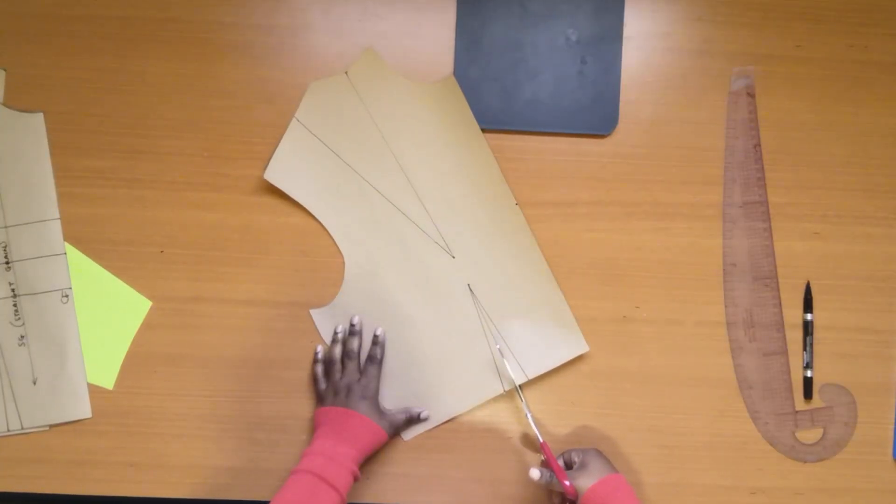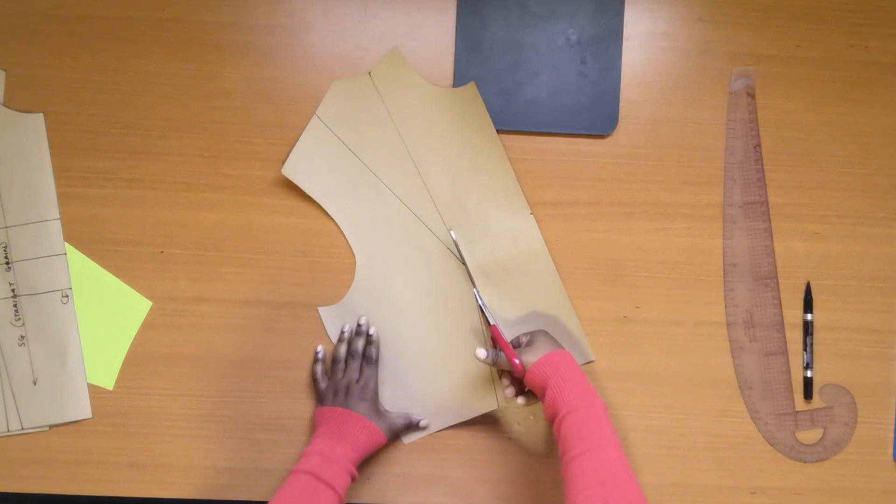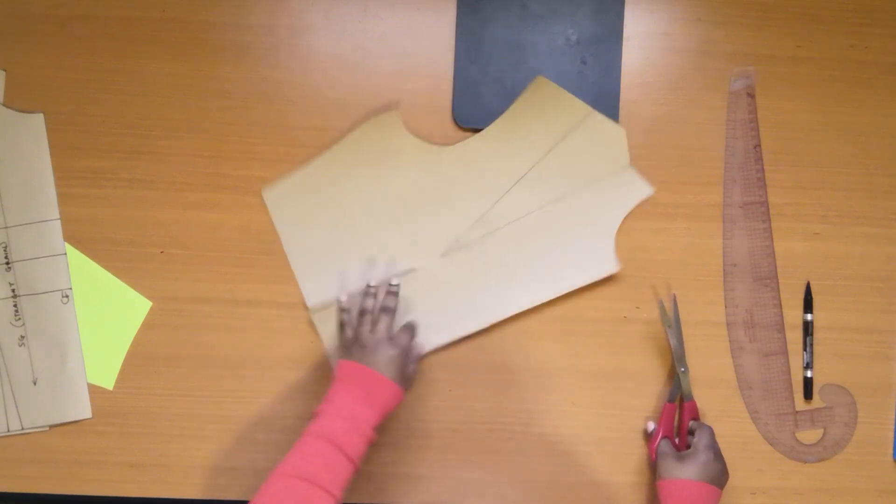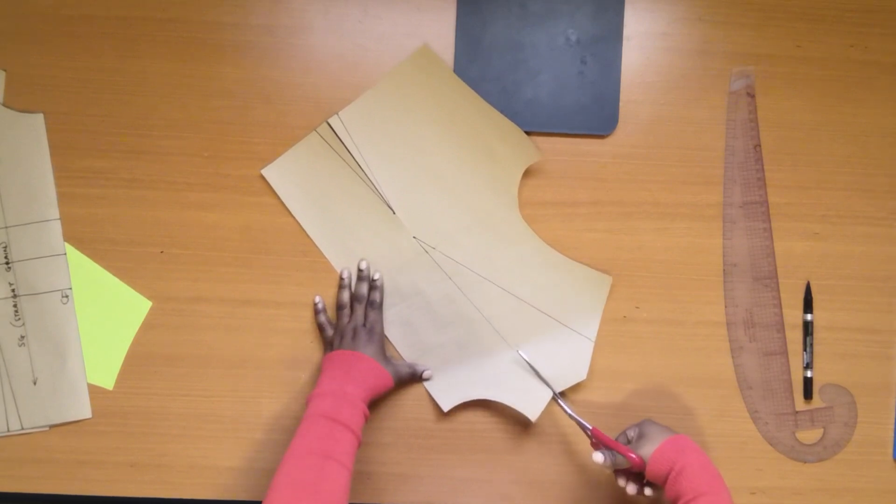For the second dart position, I'll be transferring the shoulder dart into the waist. On the waistline, cut right through the middle of the dart to the tip of the shoulder dart. Then slash the shoulder dart open.